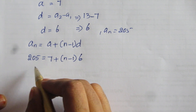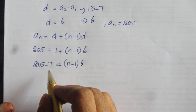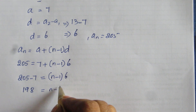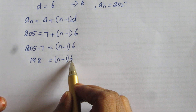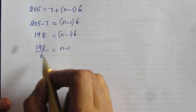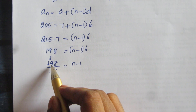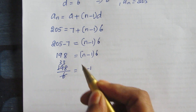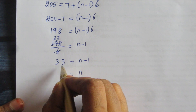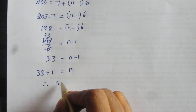Bringing 7 to this side: 205 minus 7 equal to (N minus 1) into 6, so 198 equal to (N minus 1) into 6. Now bring 6 to this side: 198 divided by 6 equal to N minus 1, which gives 33 equal to N minus 1. So N equal to 33 plus 1, therefore N equal to 34.